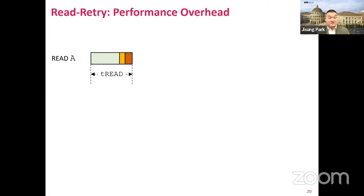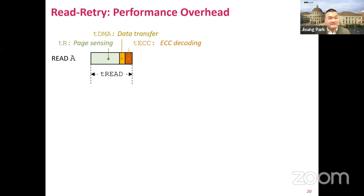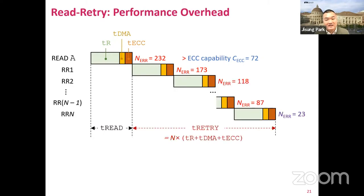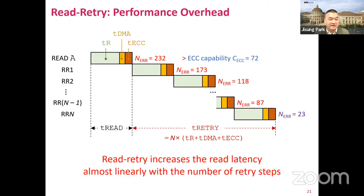Unfortunately, read-retry also significantly increases the read latency. Reading a page consists of three steps: page sensing at the chip, data transfer from the chip to the flash controller, and ECC decoding at the flash controller. If the number of bit errors is lower than the ECC correction capability, the read request can be returned immediately after ECC decoding. However, when the number of raw bit errors is higher than the ECC capability, the flash controller performs multiple read-retry steps until it reduces the number of bit errors to be lower than the ECC capability, increasing read latency almost linearly with the number of retry steps.